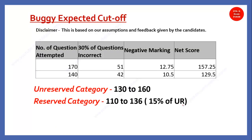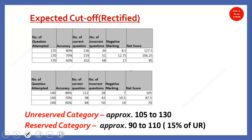This was the buggy expected cutoff that we presented in the last video, where we included the incorrect questions in the total number of questions — that is incorrect. So the net score was wrong. You can ignore that particular analysis. The rectified analysis I am bringing in this particular slide.